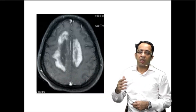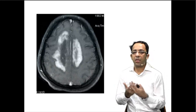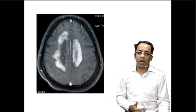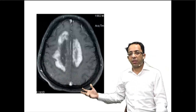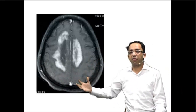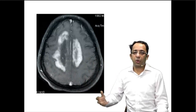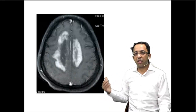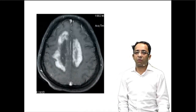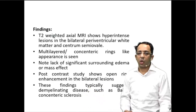T2 weighted images are more sensitive for detecting disease, while T1 weighted images are more sensitive for normal anatomy. Contrast enhanced images help us understand the presence of inflammation or tumors, because tumoral or inflammatory tissue enhances — and that gives us insight into the disease process. This was a case of Balo's Concentric Sclerosis.